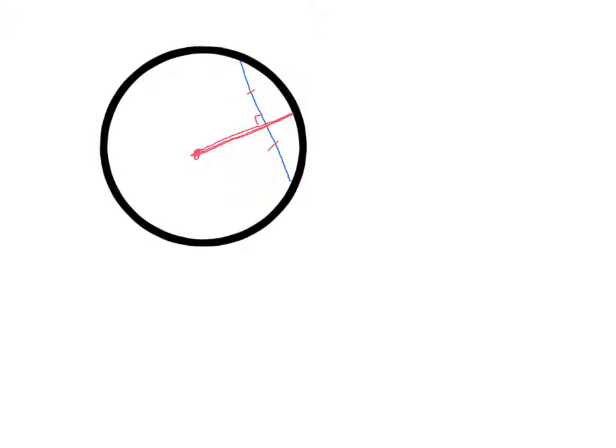It's also bisecting the corresponding arc. So that's a given. So let's look at an example.